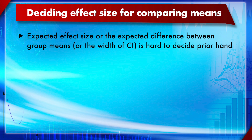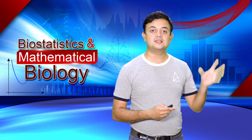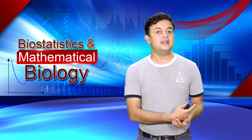Deciding the effect size for comparing means — the expected difference between group means or the width of the confidence interval — is hard to decide beforehand. However, there are guidelines by Cohen, a famous statistician. For small differences, one-fifth the standard deviation can be chosen as the effect size. For medium differences, half the standard deviation. For large differences, 0.8 times the standard deviation. These are arbitrary guidelines — do not be too rigid with them.